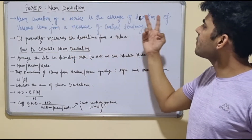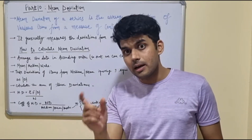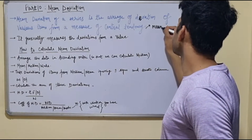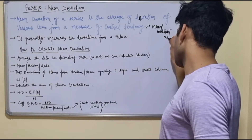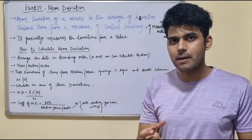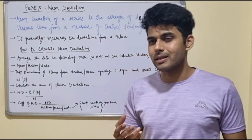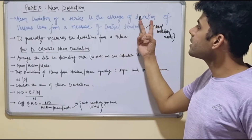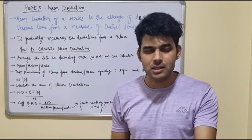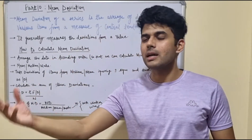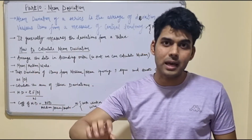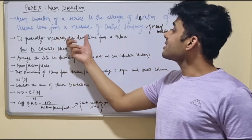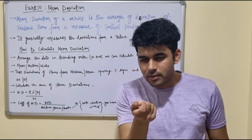Mean deviation of a series is the average of deviation of various items from a measure of central tendency. Central tendency includes mean, median, and mode — we have already understood all three with examples in previous videos. Mean deviation basically measures the deviation of data items from a central value.